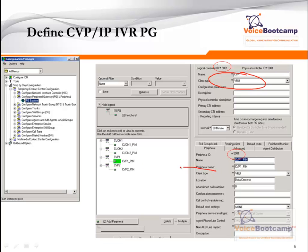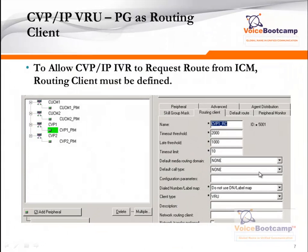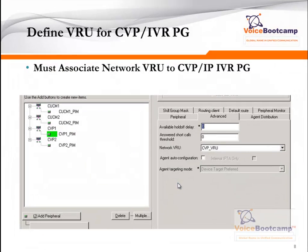The peripheral client type is also set to VRU as well. To allow IPI-VR or CVP to request a route from the ICM, we must enable routing client. Otherwise, a CVP or IPI-VR will not be able to send a request to ICM for a route. CVP uses a particular VRU type — we'll talk about network VRU in the next chapter. The VRU must be defined under the Advanced tab of that particular peripheral interface manager.